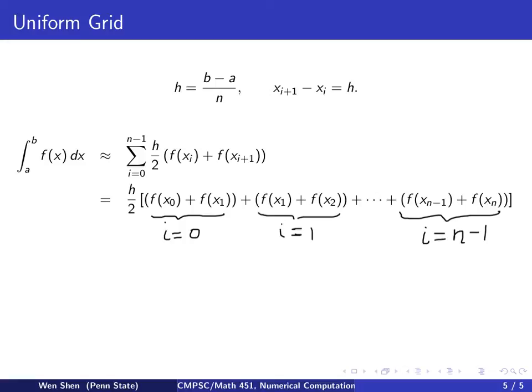We make this observation that many terms, say f of x_1, is actually computed twice. So here we are thinking of computational efficiency, saving CPU time. If we code the algorithm following this formula with a for loop for this summation, we notice that f evaluated at x_1 is computed twice: first when i equals 0, second when i equals 1.